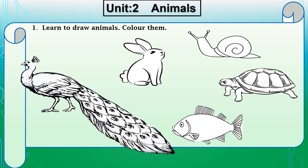After tracing the animals' outline, try to draw it. After two or three attempts of tracing, try to draw the animals' outline on any rough notebook or plain paper drawing notebook. Now on this page, you also have to color these animals however you like.